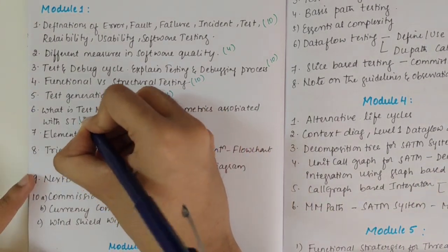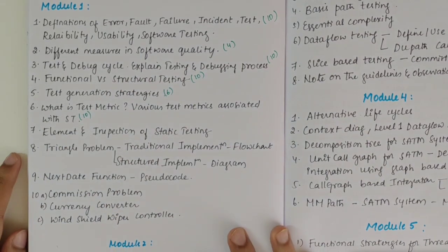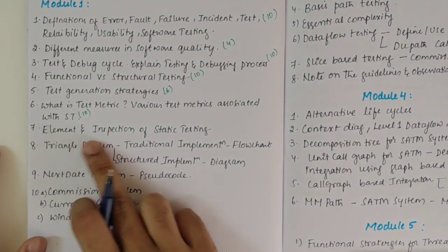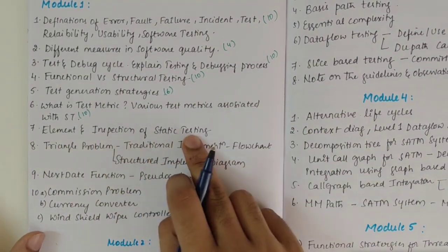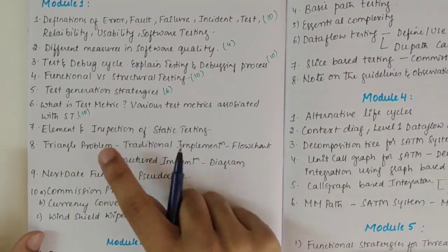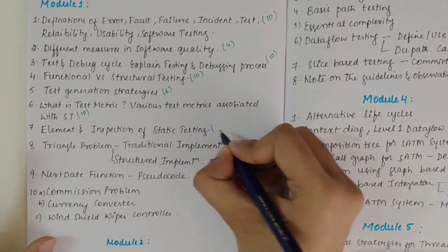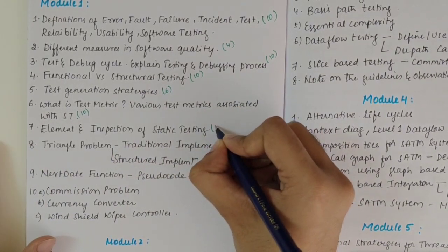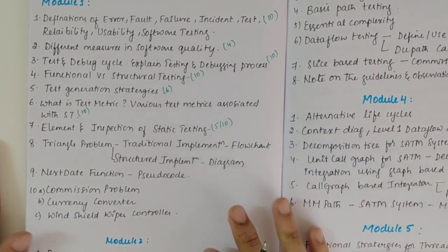If asked, this can again be of 10 marks. Then we have elements and inspection of static testing. Under the static testing topic, we have inspection and elements. Make sure you cover this topic — it could be asked for five or 10 marks.